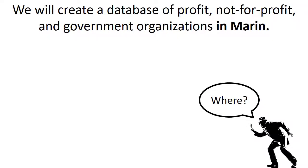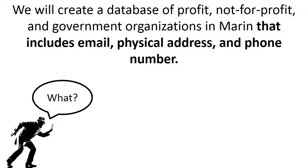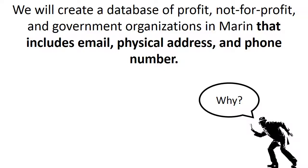Next, we can ask where. We can say we're going to look for these organizations that operate in Marin. Then: what information is going to be included in the database? We are going to include email, physical address, and phone number. And then — this is really important — we need to answer why. Why are we doing this? What is the greater purpose we are trying to achieve? When you give someone a goal, they are invariably going to have to make compromises and use their judgment in carrying it out. It makes it a lot easier if they understand overall what they are trying to achieve, so they can make the right decisions to get the goal accomplished in the way you want it accomplished.